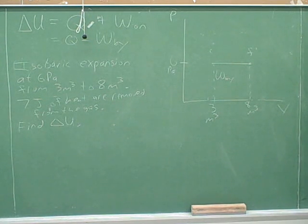So I can use the graph to find W, and then plug in Q, negative 7, to find delta U. That sounds like a good plan. Let us execute that plan. Okay.